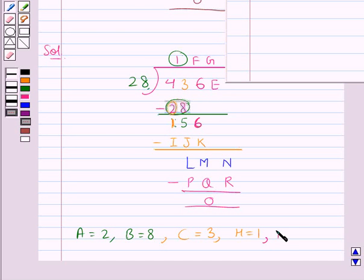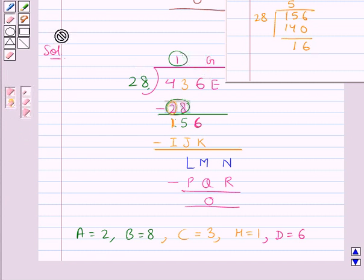Now we divide 156 by this divisor 28, and we have 28 5 times is 140 and the remainder is 16 here. So in the question we would write 5 here in place of F. We write 5. That is we get the value of F as 5 and we write 140 in place of I, J, K.